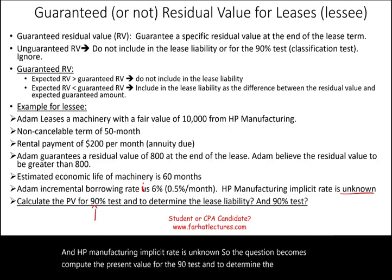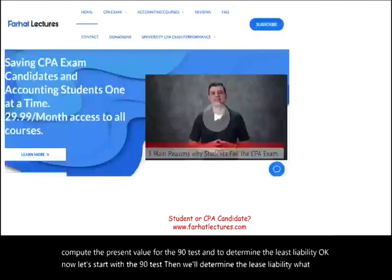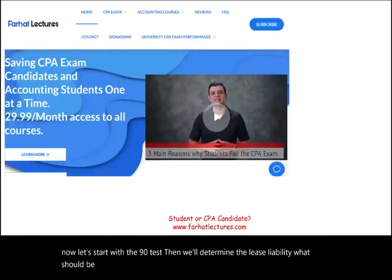The question is: compute the present value for the 90% test and determine the lease liability. Let's start with the 90% test, then we'll determine the lease liability.